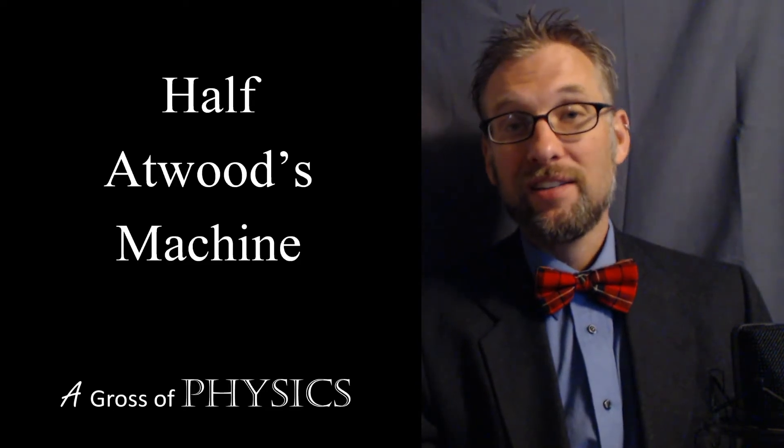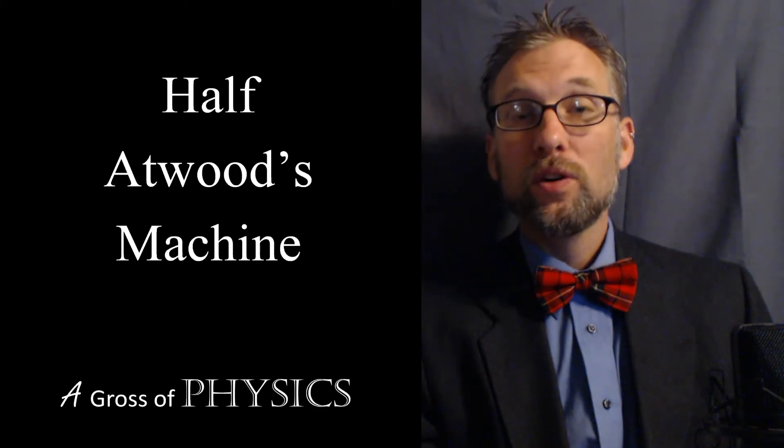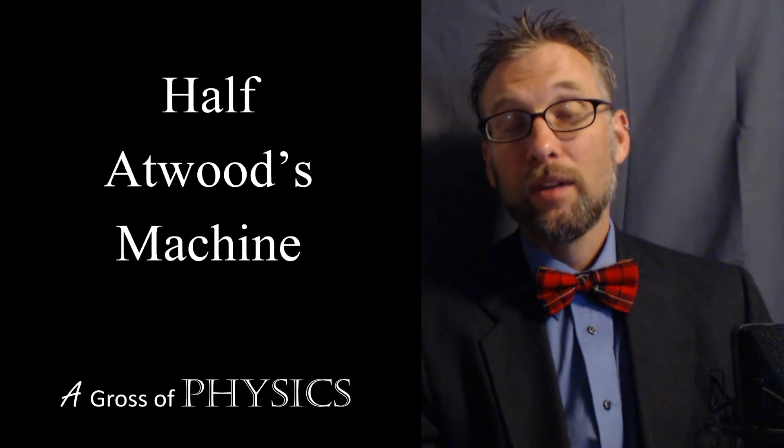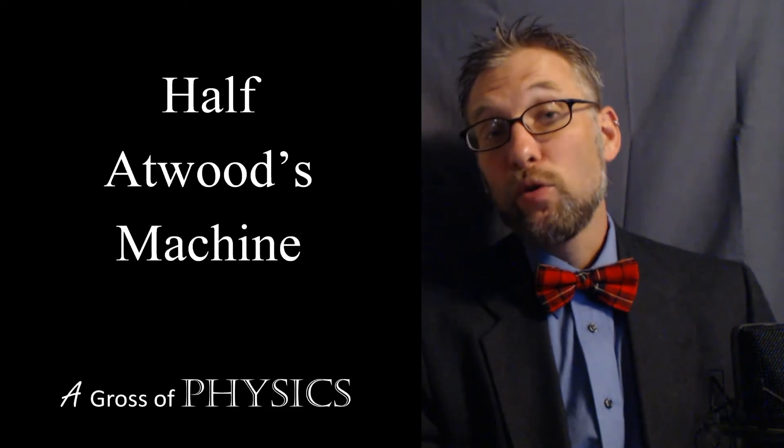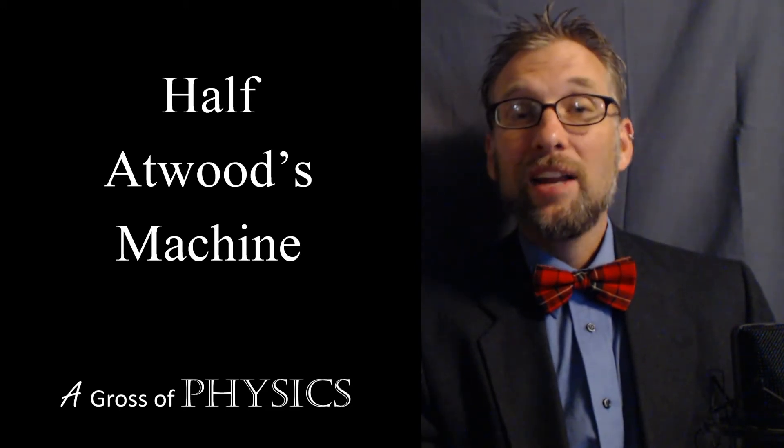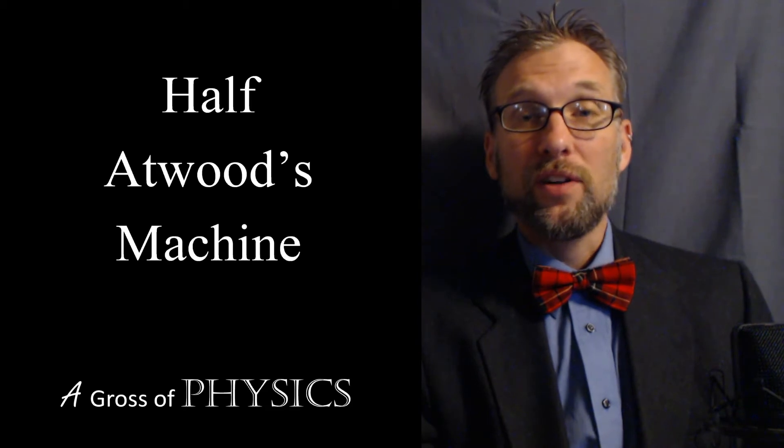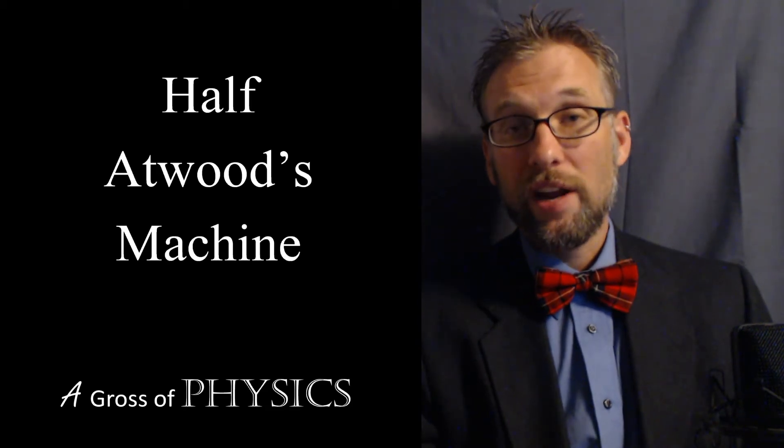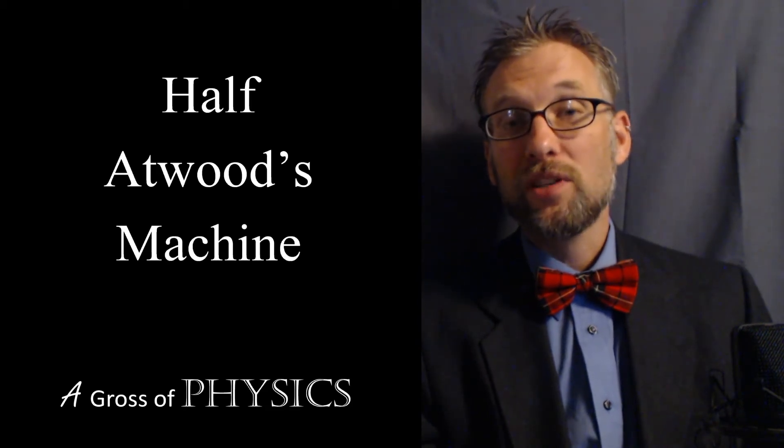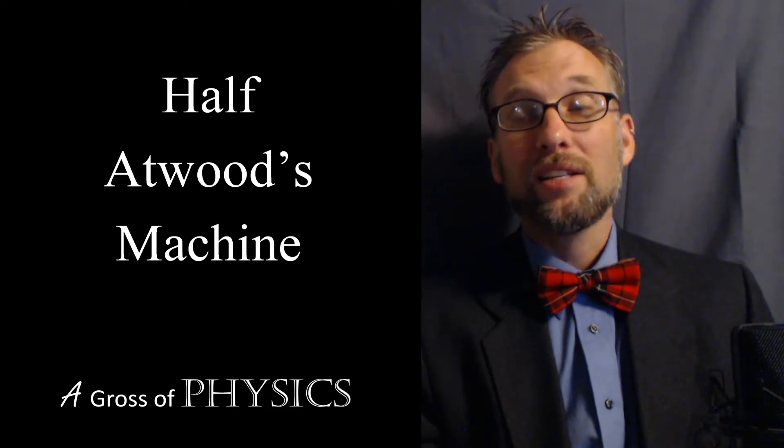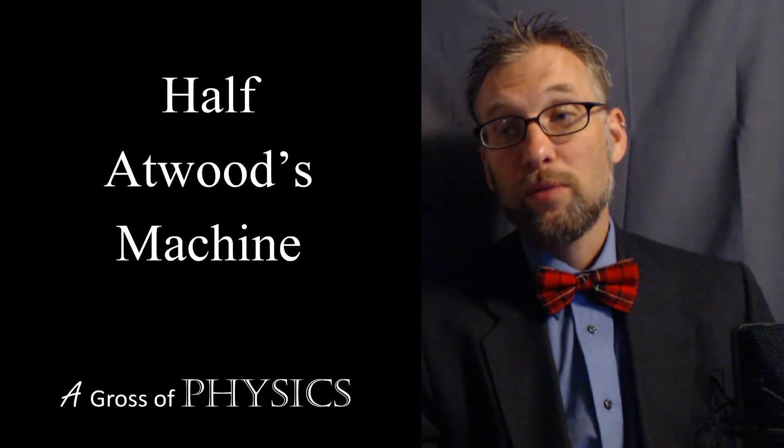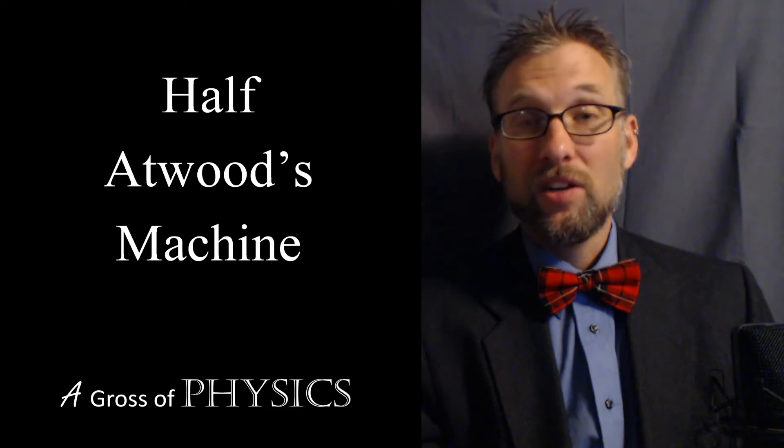George Atwood invented this in 1784 to analyze constant motion. With the big five equations we need uniform acceleration, and when we drop objects near Earth's surface we have acceleration of -9.8 m/s². George Atwood came up with a device that would allow us to analyze accelerations between 9.8 and zero.